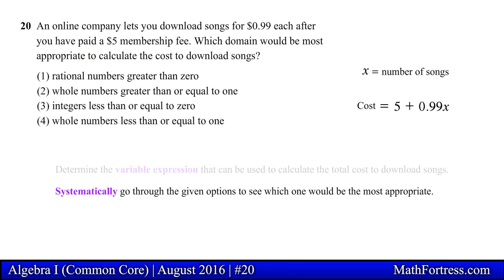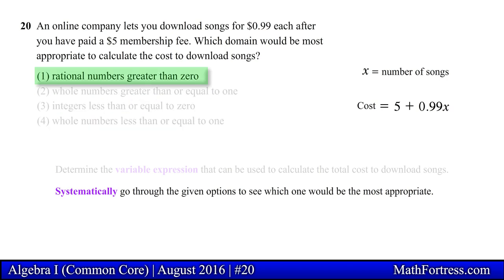Now let's systematically go through the given options and determine which one would be the most appropriate. Option 1 reads rational numbers greater than 0.